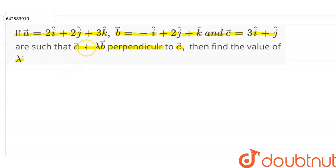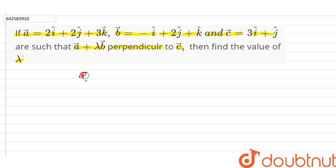We are given that vector a plus lambda vector b is perpendicular to vector c. Whenever two vectors are perpendicular to each other, the condition is that their dot product should be zero. So (vector a plus lambda vector b) dot vector c equals zero.